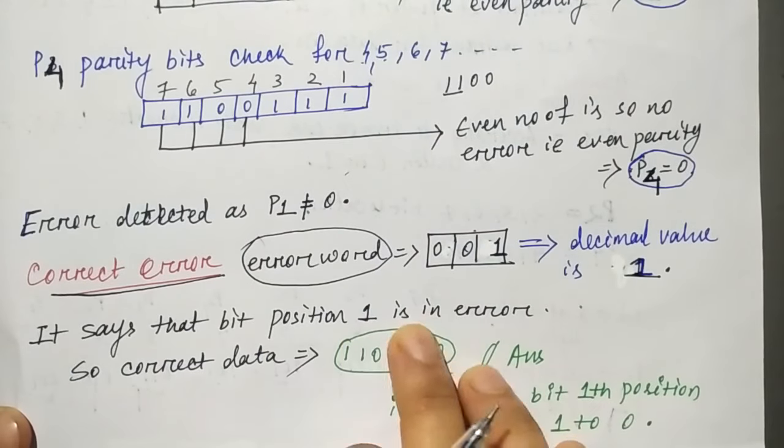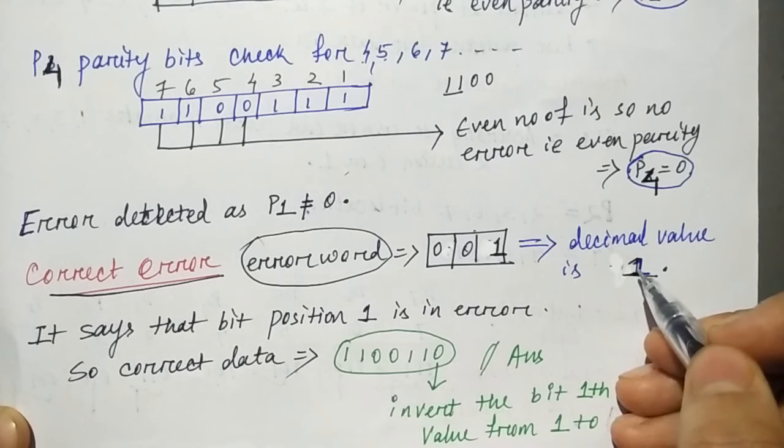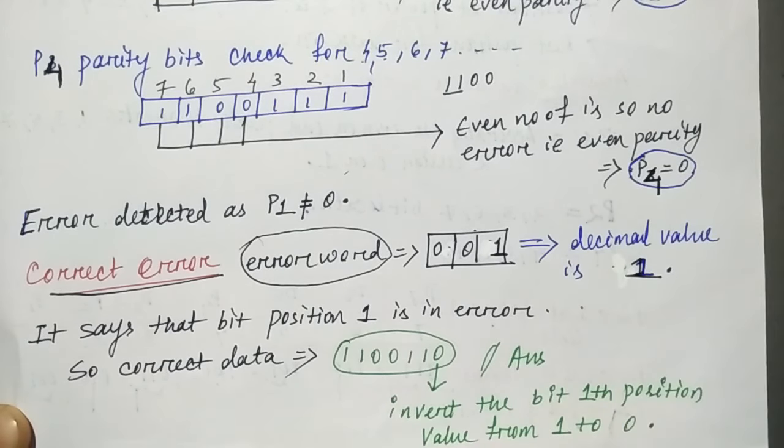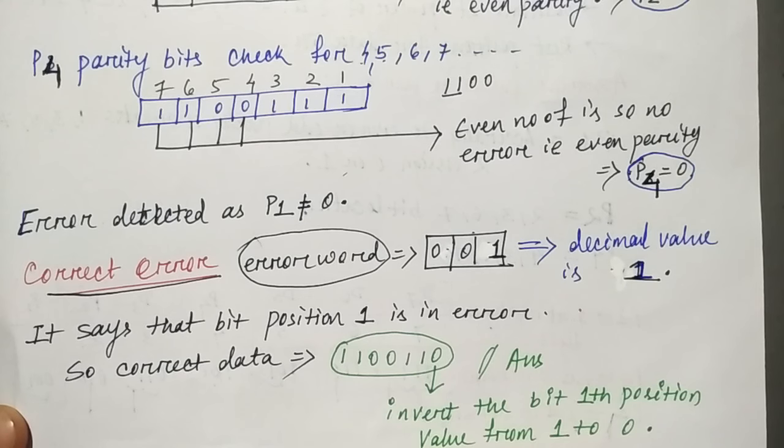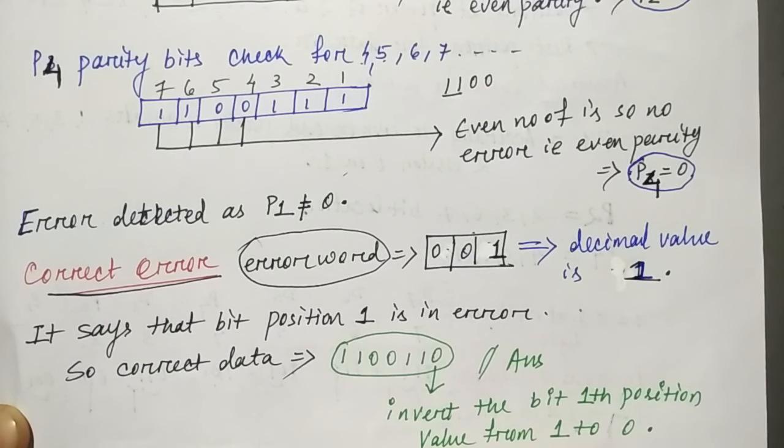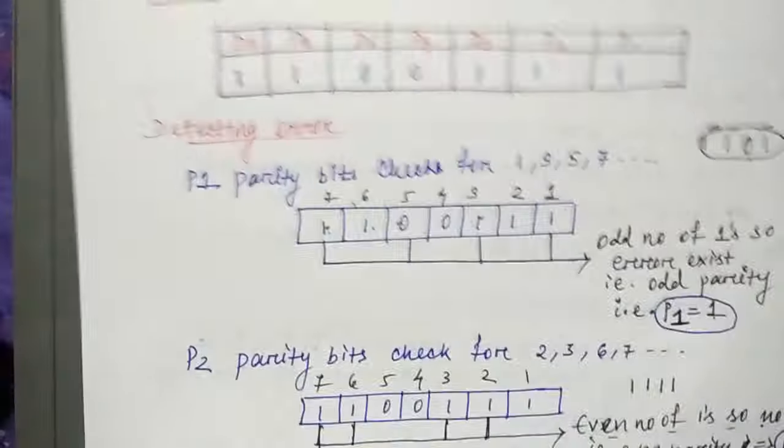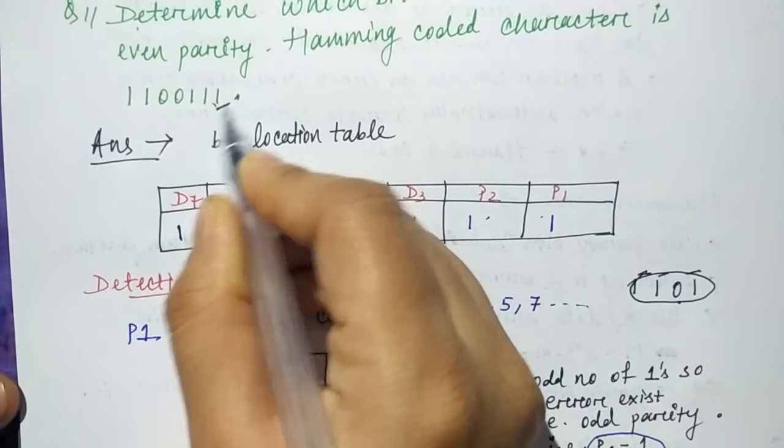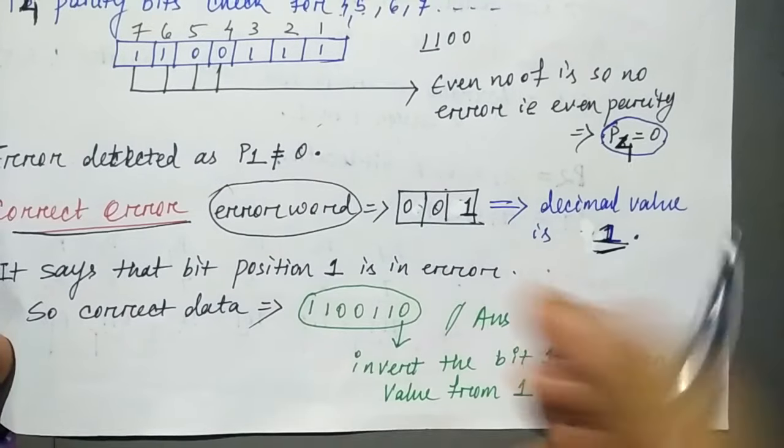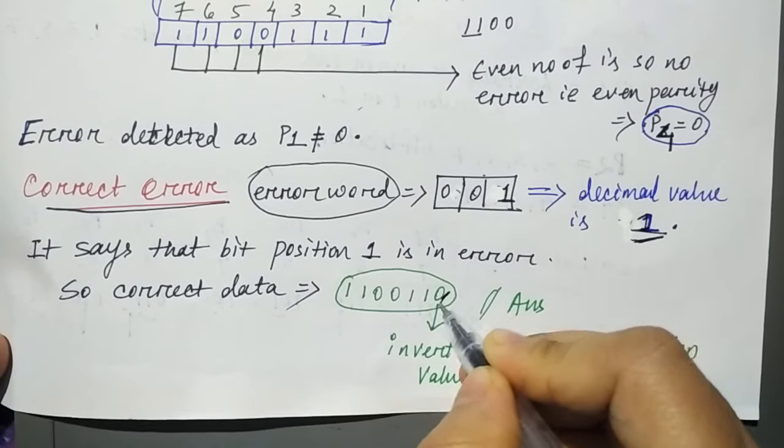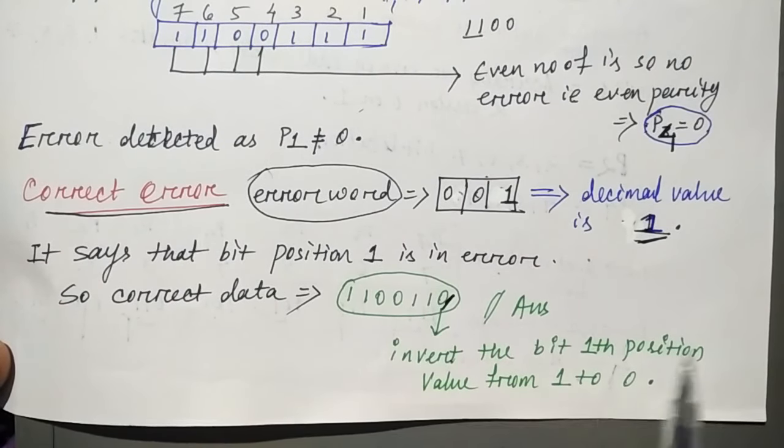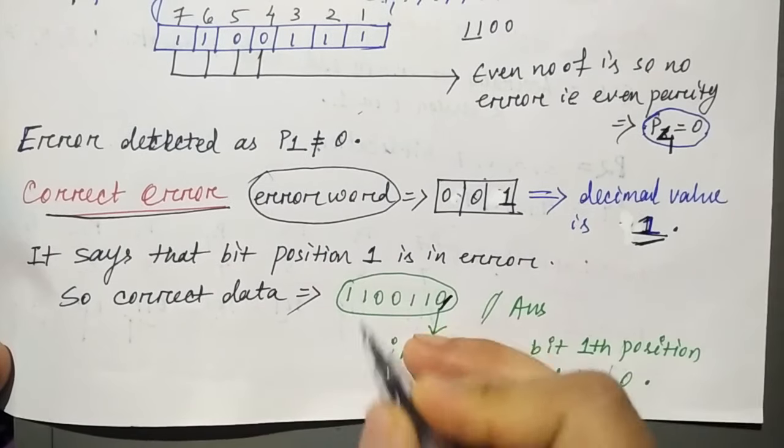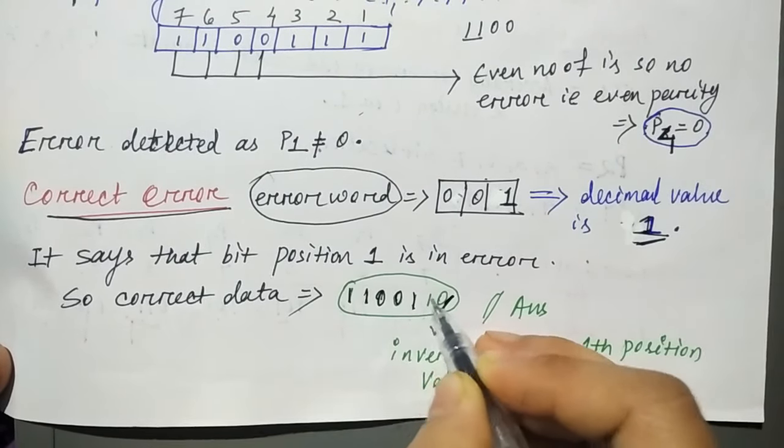It says that bit position 1 is in error. So whatever position you have the error, you will correct the data. Which way? In that position, in the given question, you will alternate or inverse the data. In the first position, what was the data? 1. So we know there is error in position 1. We will alternate the data. Invert the first position value from 1 to 0. So now this is our data without error.